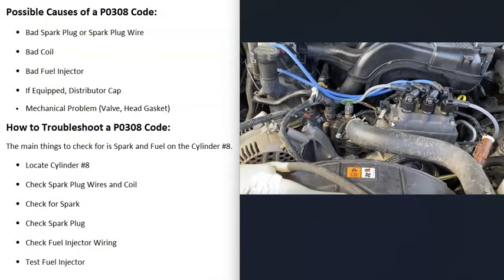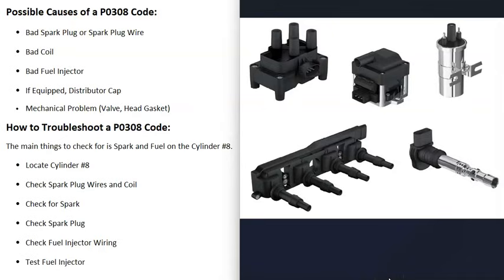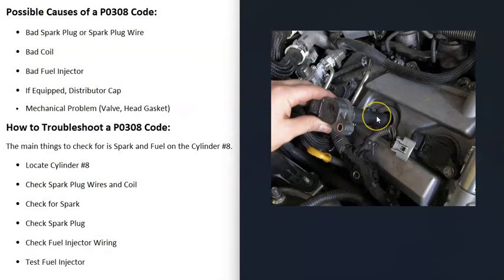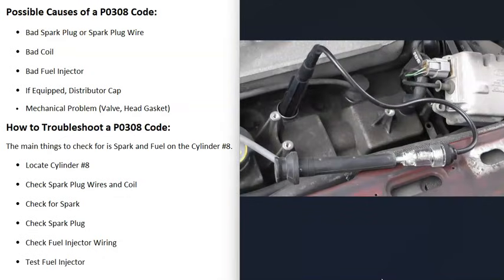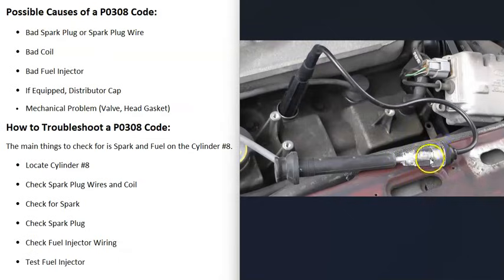Next, check the spark plug wires going to cylinder 8 and the coil that sends the spark to the spark plug. Different engines have different types of coils, but they all send high voltage to the spark plug. If you have a coil on every cylinder, you can swap it with cylinder 7 and see if the problem follows — if you then get a P0307 code, you know it's that coil. You can also use an inline spark tester tool, which usually costs less than $10–$15. One side connects to the spark plug, the other to the coil, and when you start the engine you should see a spark. No spark means a bad coil or similar issue.